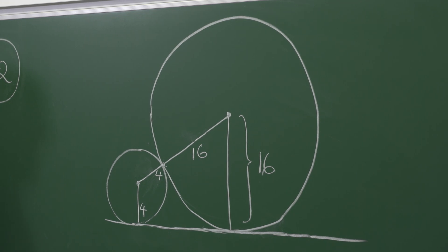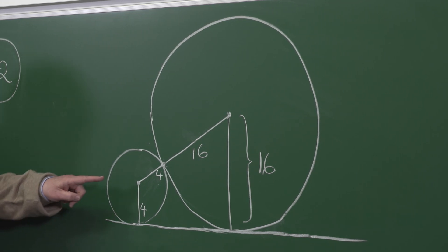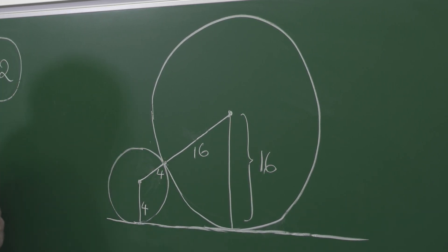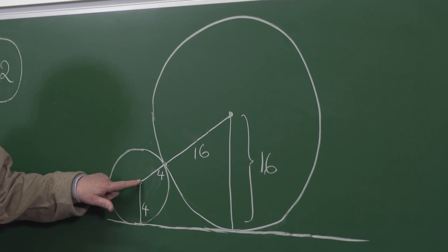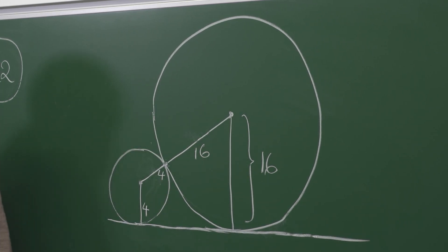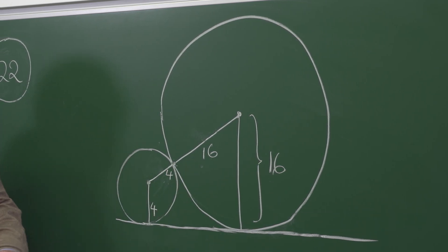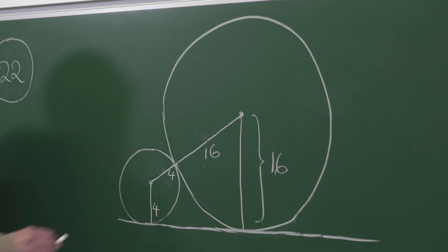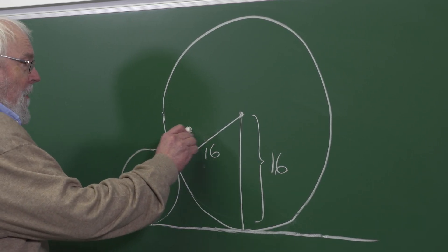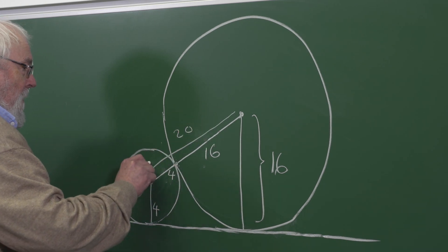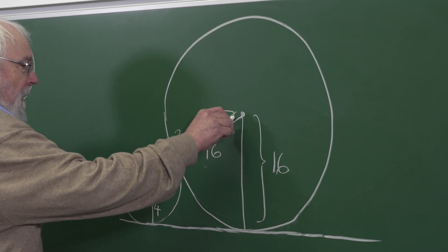Now the point of contact between the two spheres will be on the line joining their two centers. 4 plus 16 is 20, so we learn that this line segment here has length 20.